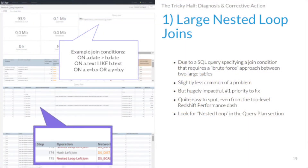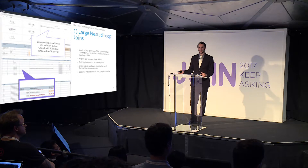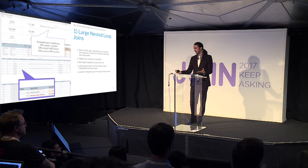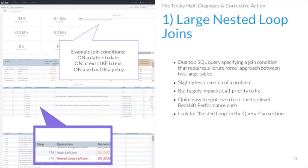A nested loop join is where your join condition causes the database to use essentially a brute force approach to join two tables. Common triggers include inequality joins, text matching when you don't have an actual relationship between tables, and OR conditions where you're not constraining two things to be equal. In your query plan, you'll see 'nested loop join' highlighted in red. I prioritize this as number one because even though it's slightly less common, it is hugely impactful.